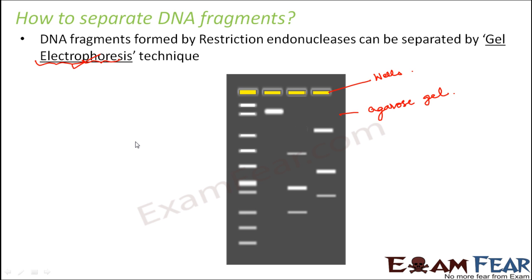Why do we want to separate the DNA fragments? The DNA fragments are formed by endonuclease enzymes, but we are not interested in all the fragments — we are only interested in the desired genes, or the gene of interest. That gene of interest will be located in only a specific fragment of DNA. Therefore, DNA fragments need to be separated so that the fragment with the desired gene can be isolated. That is the purpose of gel electrophoresis.